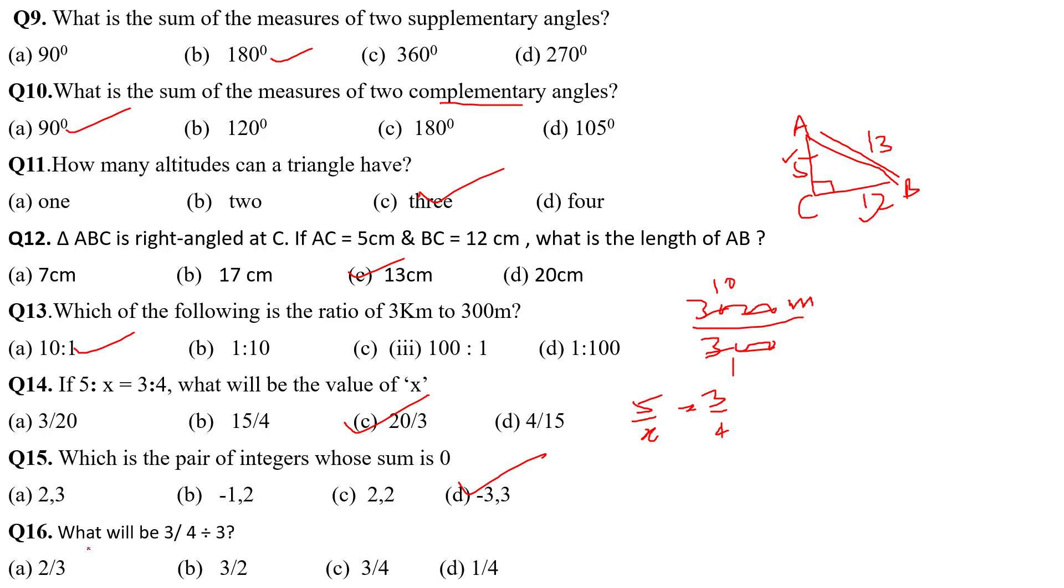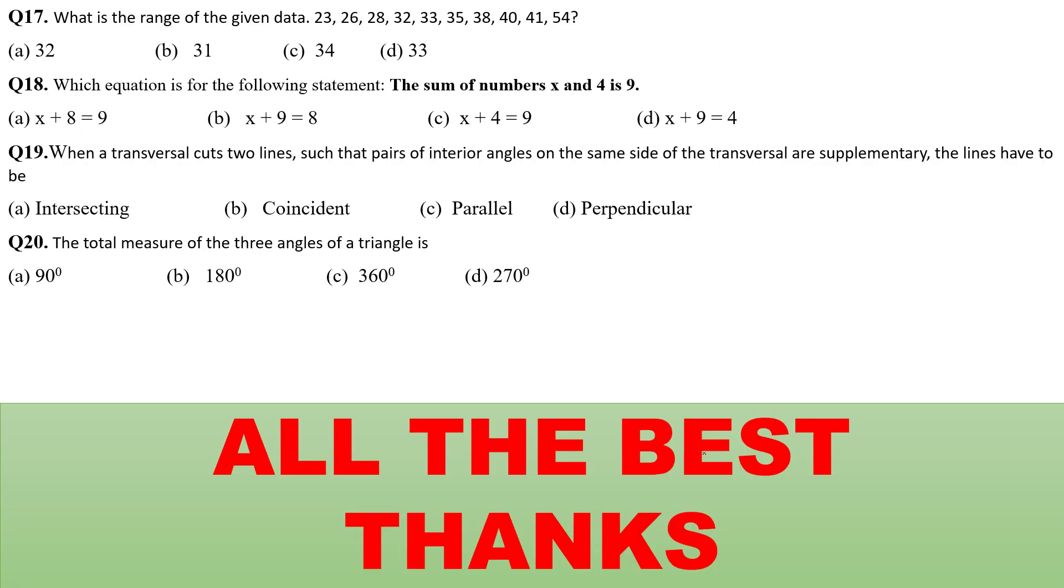So, now question number 16 is 3 by 4 divided by 3 by 4, it is divided by 3. When it changes in the multiple, it will be 1 upon 3. So, answer 3, 3 cancel out. The answer will be D. 16 questions within 3 minutes. So, now let's we do some more questions.